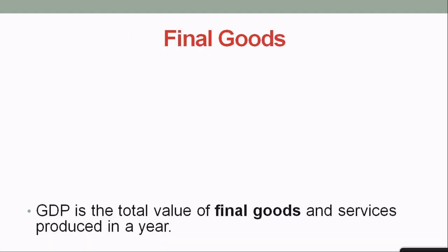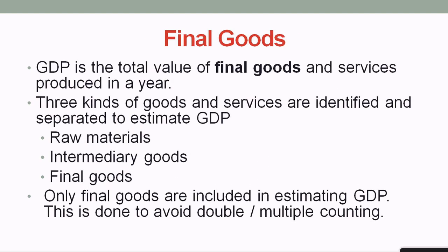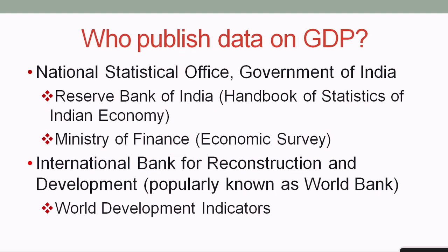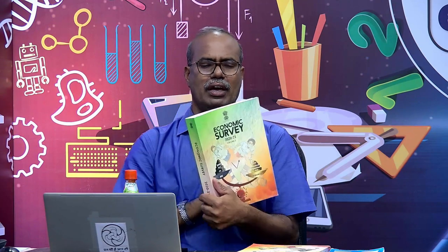GDP is not calculated on a single date like 31st March — it is based on data collected over the entire year. So GDP is the value of final goods and services produced within a country during the whole year. In India, there is something called the National Statistical Office — they come out with data on gross domestic product, collecting data from states, farmers, and agencies all over India.